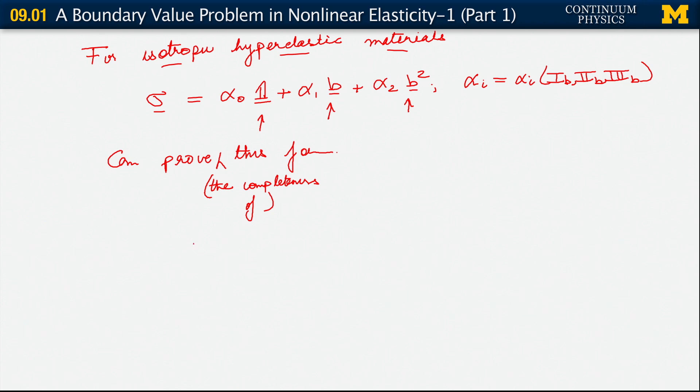And the steps in the proof are actually what I laid out at the beginning of the last segment. They come from the fact that tau has this form, and the fact that psi is a hyperelastic strain energy function that's also for an isotropic material.